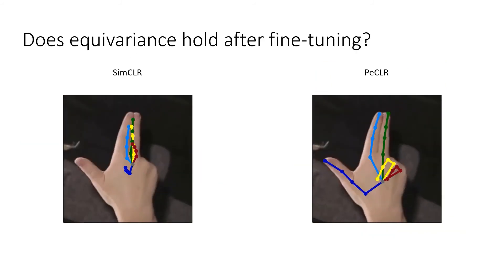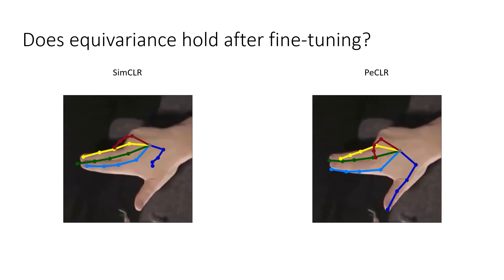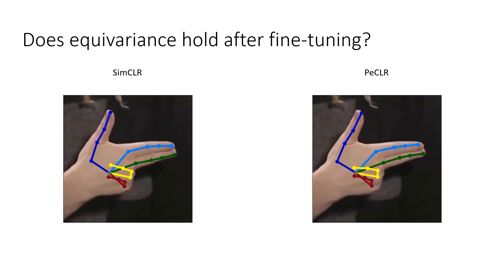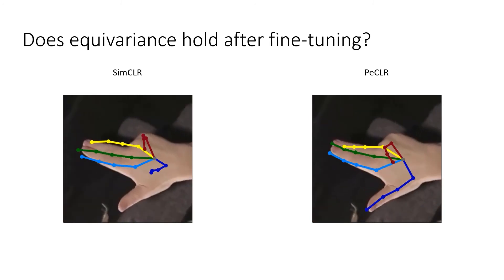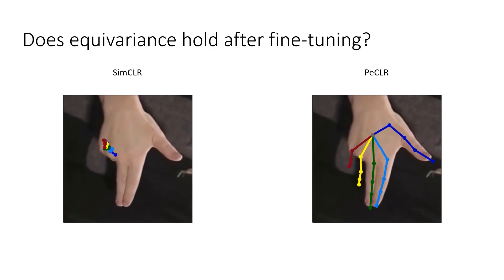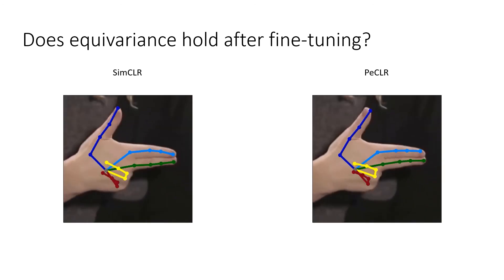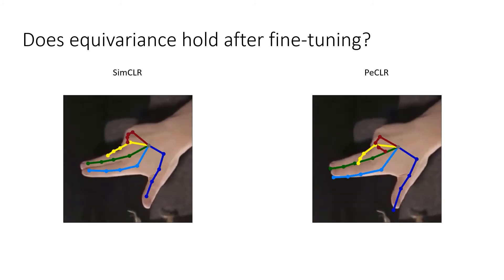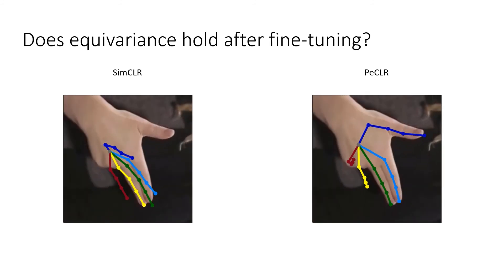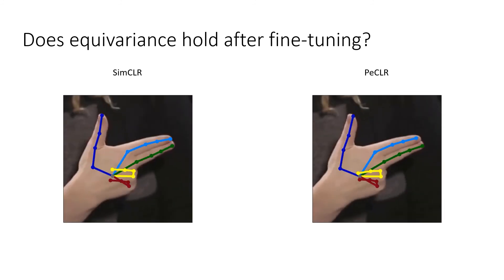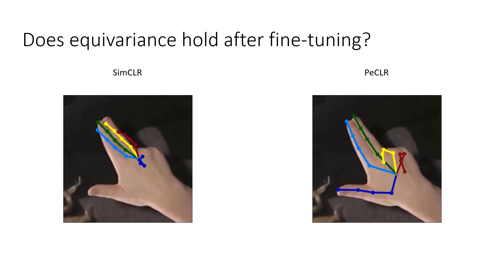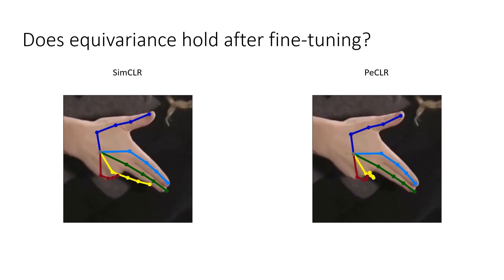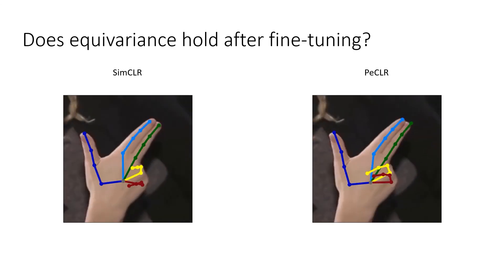However, does the equivariance property hold after fine-tuning? To see this, we inspect the PECLR and SimCLR to measure the amount of equivariance. This is done after fine-tuning the entire model. To this end, we rotate the input image and inspect the resulting predictions of PECLR and SimCLR. Here, we show the qualitative results. To the left, we see the pose estimation by SimCLR and to the right, we see the pose estimation by PECLR. The pose estimate from PECLR is much more stable when compared with that of SimCLR.